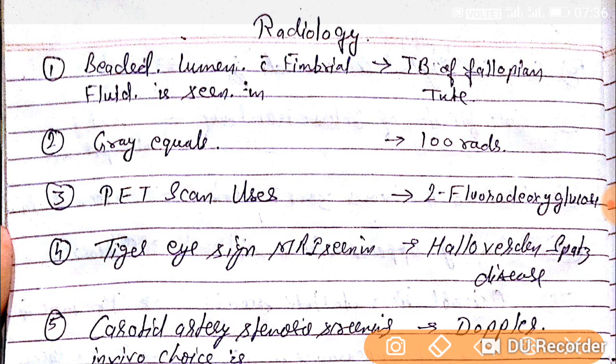Beaded lumen with fibril fluid is seen in tuberculosis of the fallopian tube, as you can see here.